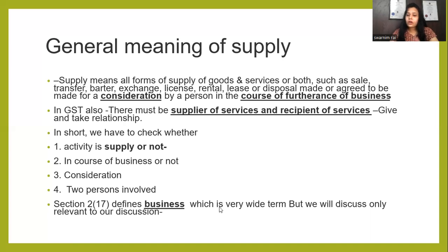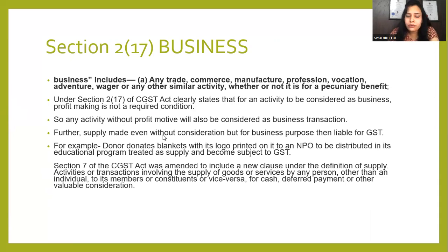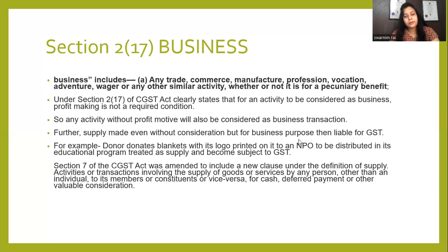Business is also defined in GST under Section 2, subsection 17, in a very detailed definition. Business includes any trade, commerce, manufacture, profession, vocation, adventure, wager or any other similar activity, whether or not it is for a pecuniary benefit — pecuniary means profit. Section 2(17) of CGST clearly states that for an activity to be considered as business, profit making is not a required condition. So any activity without a profit motive will also be considered a business transaction. Charitable trusts, religious trusts or institutions — even without profit motive — fall within the business definition.